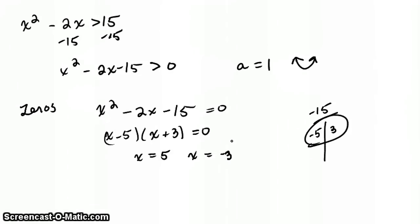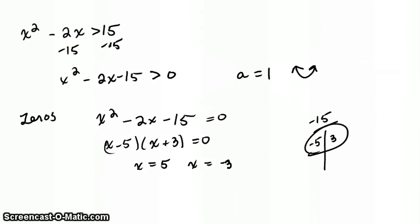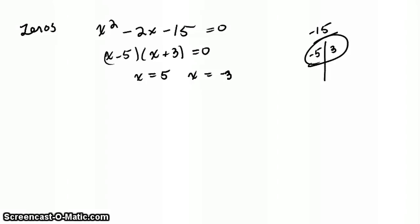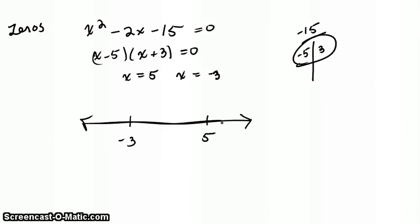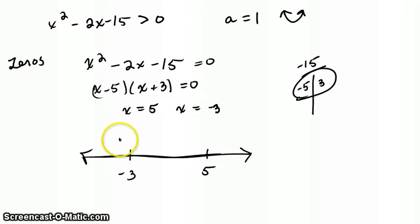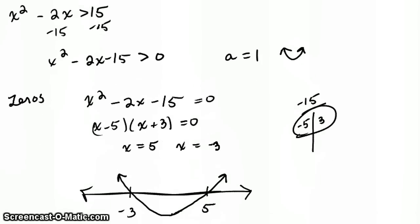Now that I've found the zeros, I'm going to plot them on a number line along with the direction. So we have negative 3 and 5. Remember, our direction is up. So I'm going to draw the parabola going up through those two points. Now let's look at what our question is asking — when is x squared minus 2x minus 15 greater than 0?